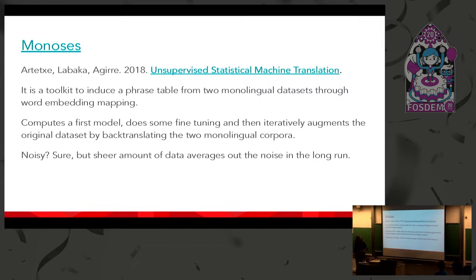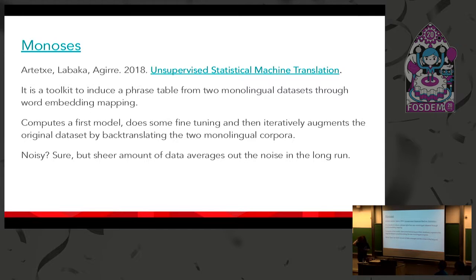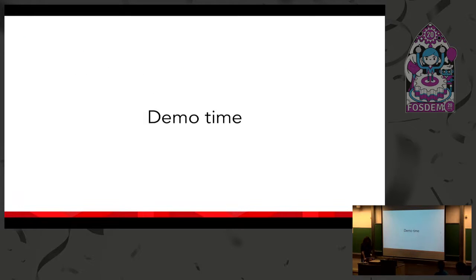Today we're presenting the second technology: MONOSES. MONOSES stems from a paper by three scientists, and it's basically a toolkit to create phrase tables from two monolingual datasets through word embedding. It creates a MOSES model from this noisy data, does some fine-tuning, and iteratively augments the dataset by translating itself. You can start with one million sentences and rapidly go to ten million, trying different combinations. The noise averages out over the sheer amount of data generated.